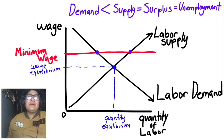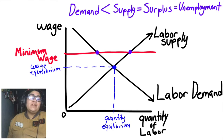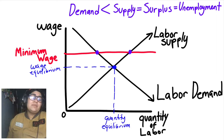Here we can see where the surplus and unemployment comes from. You can see the wage equilibrium, and then the government setting a minimum wage decreases labor demanded and increases the labor supplied.